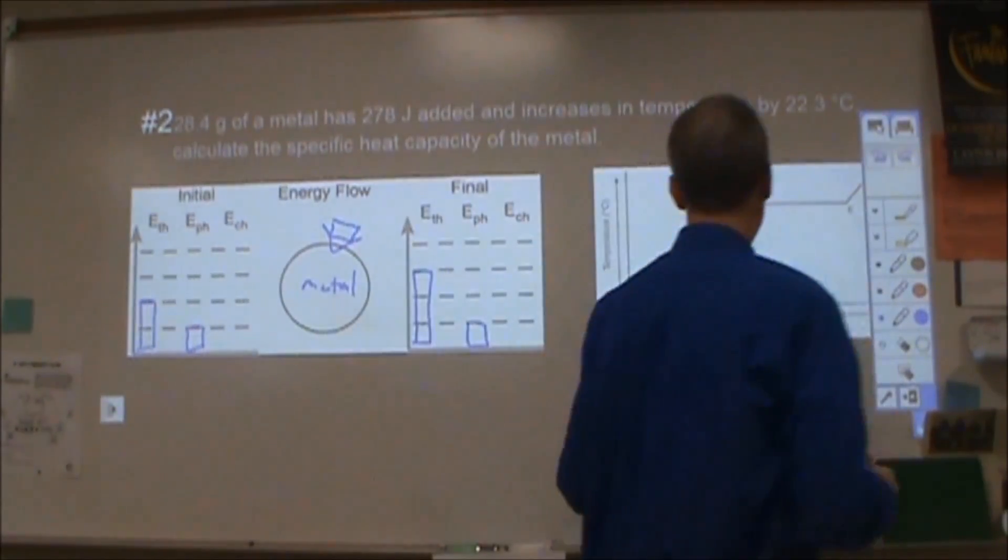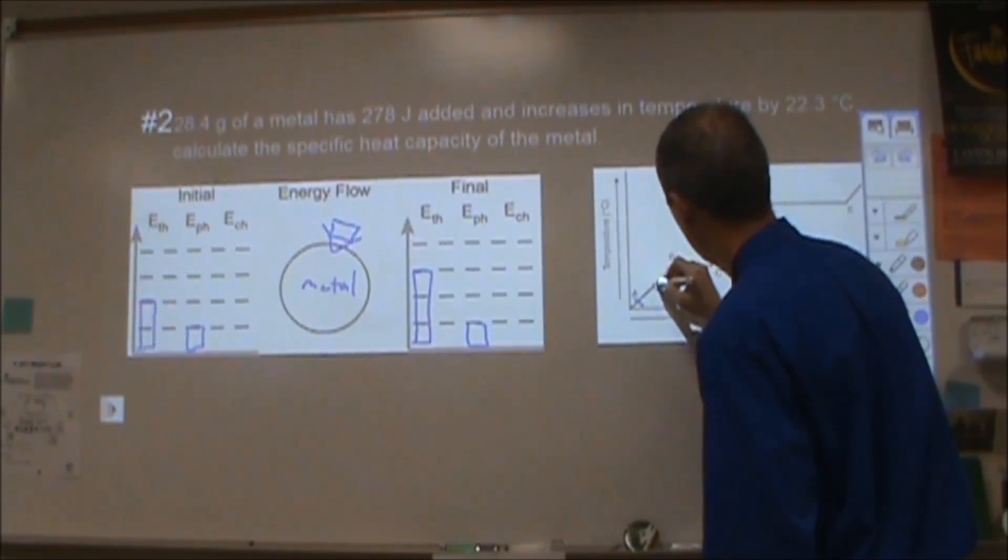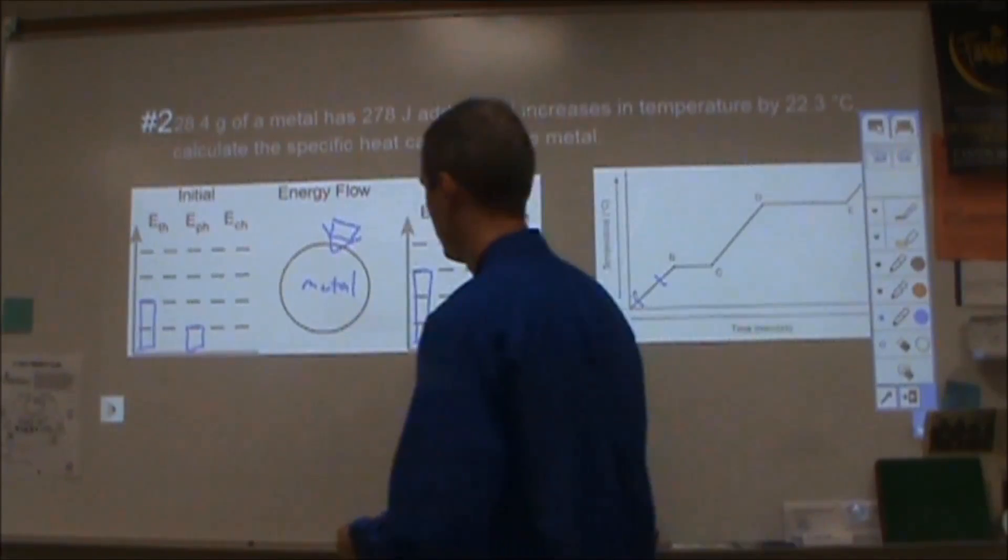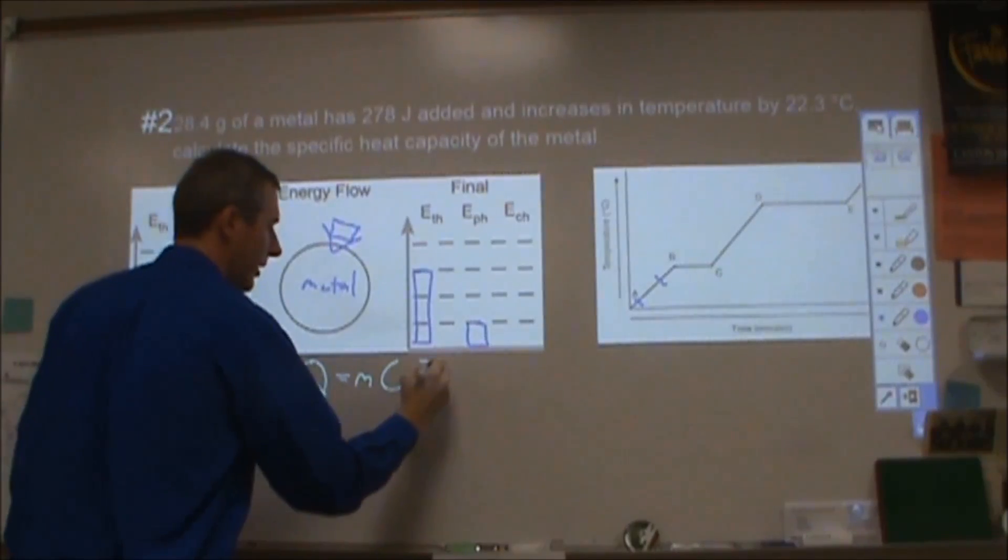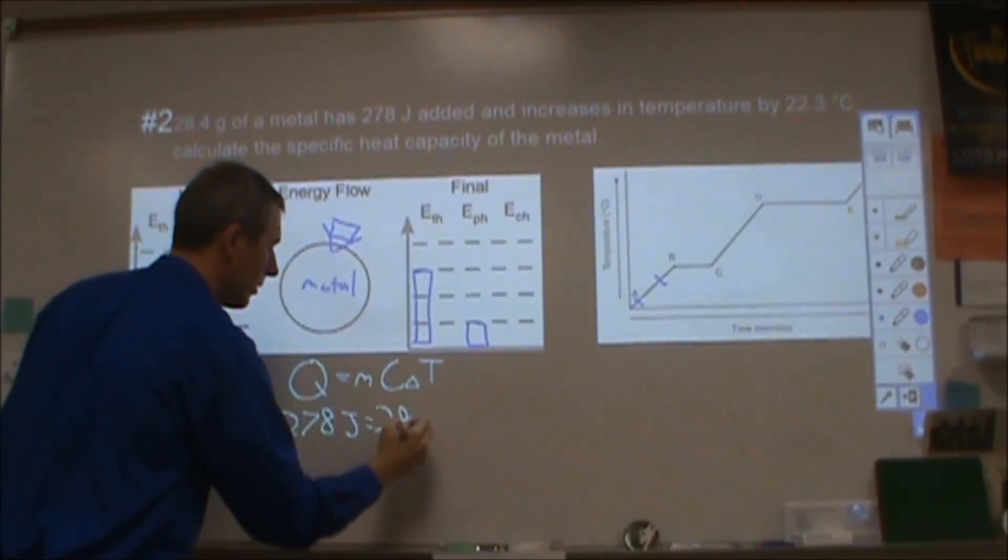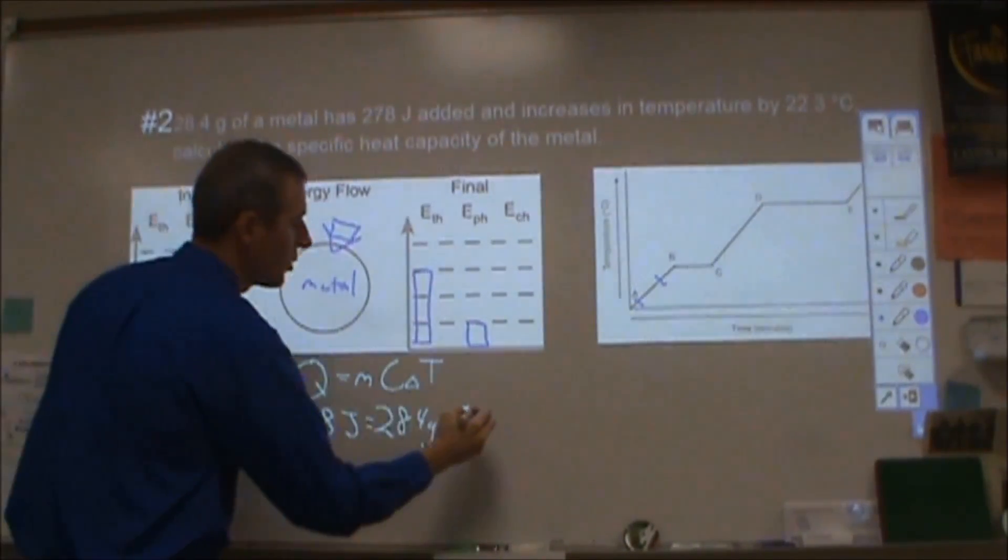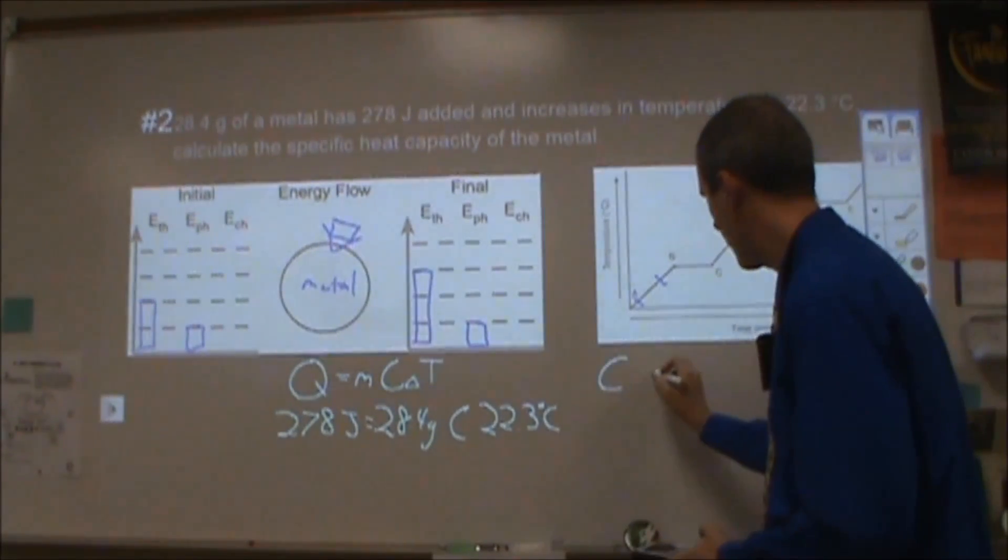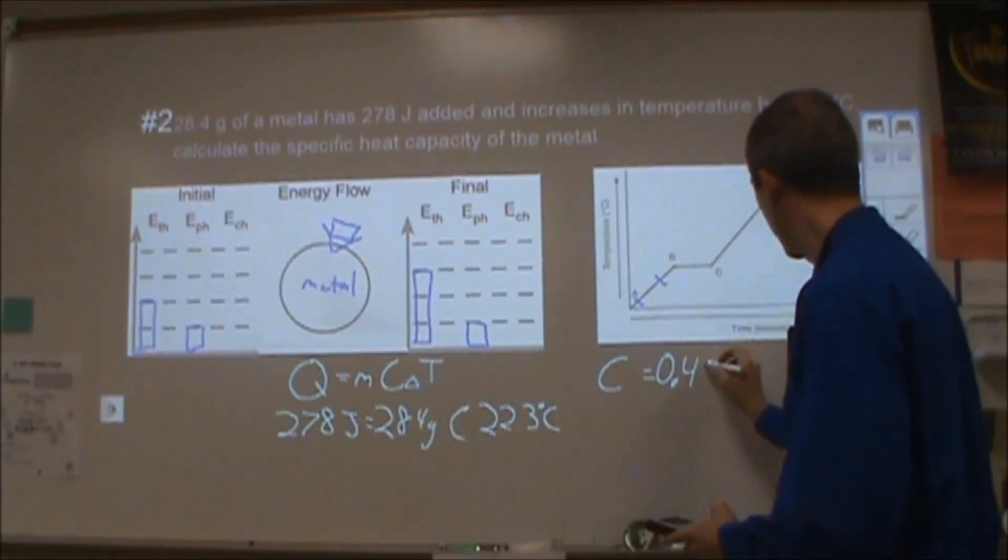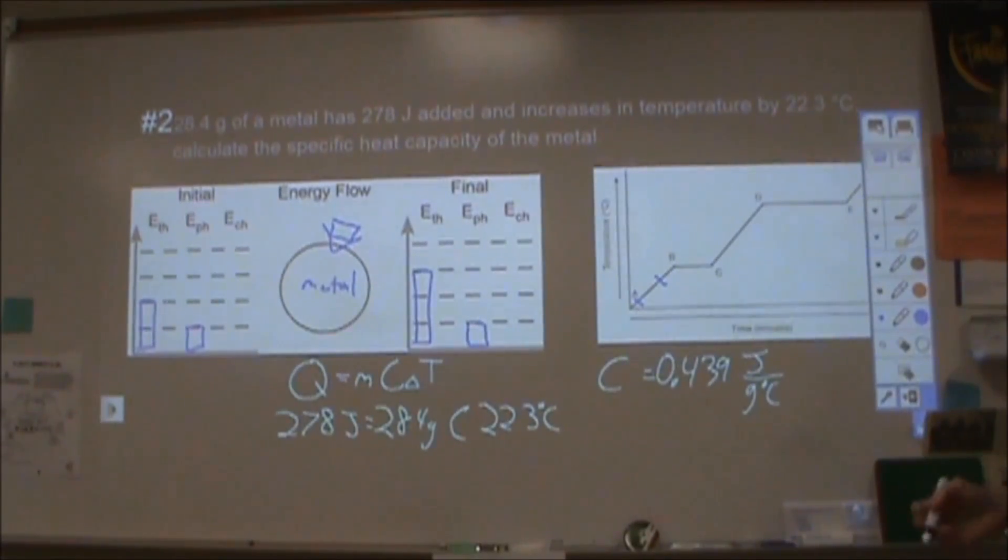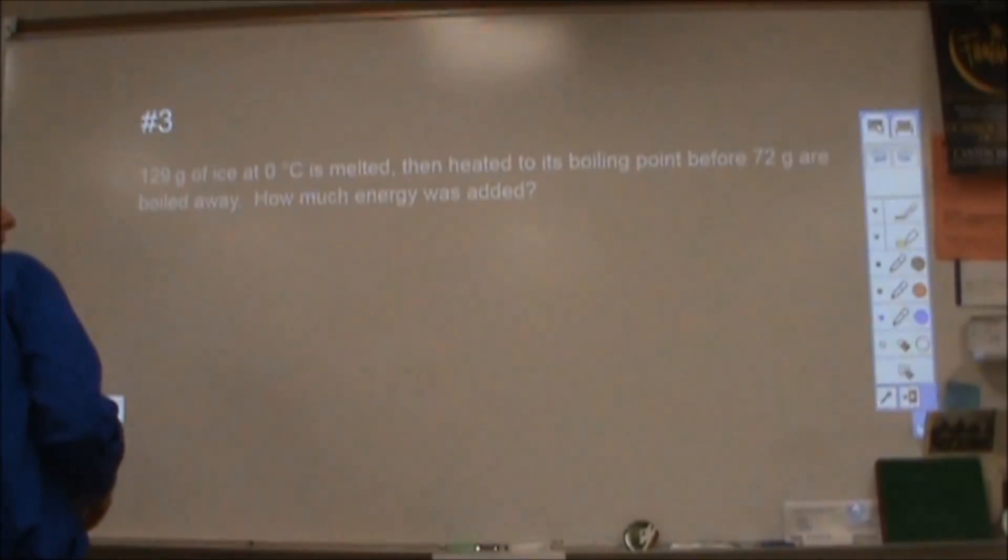Phase is not changing. As far as my curve goes, I'm starting somewhere along the solid curve and ending somewhere that's 22.3 degrees higher. So only a single calculation here. That's going to be an MC delta T calculation. So I know that I have 278 joules, that would be Q. My mass is 28.4 and the temperature change is 22.3 degrees Celsius. So I can solve for the specific heat capacity by taking that 278 and dividing it by the mass and dividing it by the temperature change. And when I do that, I get a specific heat capacity of 0.439 joules per gram per degrees Celsius. I have three sig figs for everything, so that's fine.